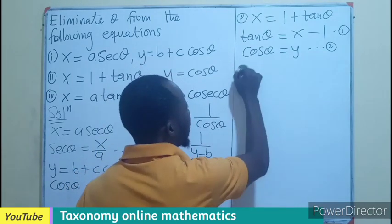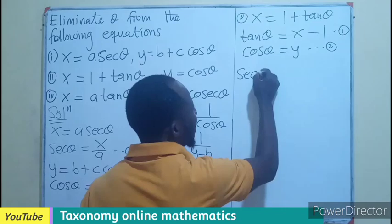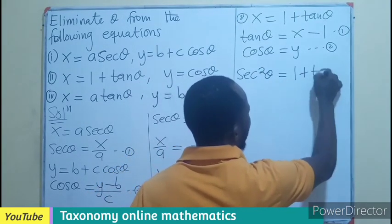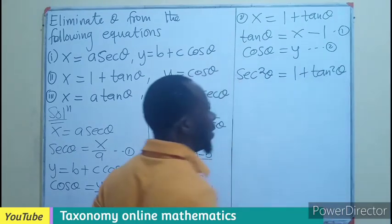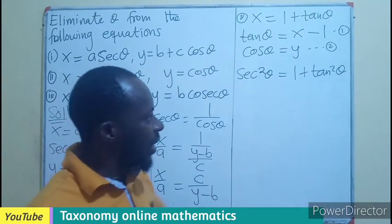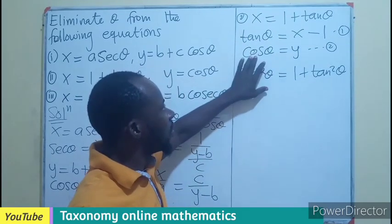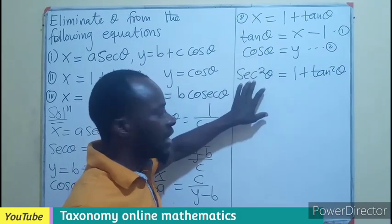Let's say we have sec square theta equals 1 plus tan square theta, where in this case, theta is featured. So if I look at sec, I can see that sec, I have to call it cos, is the inverse.